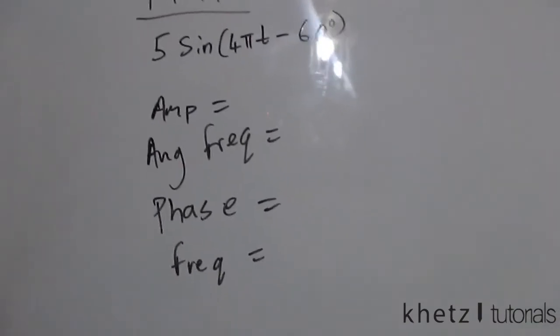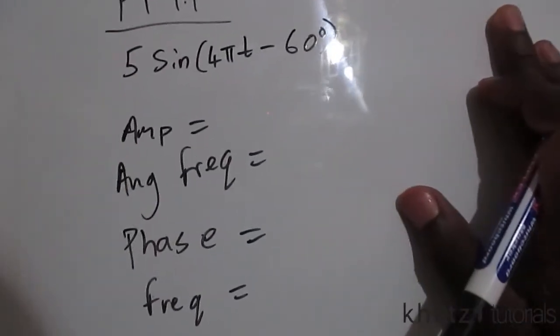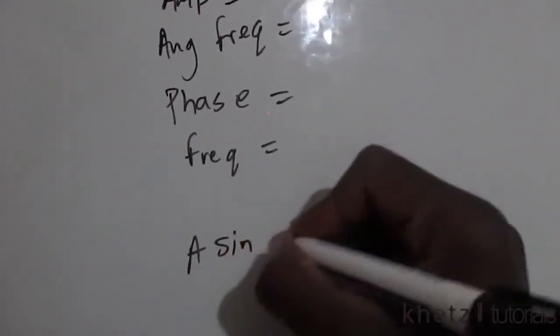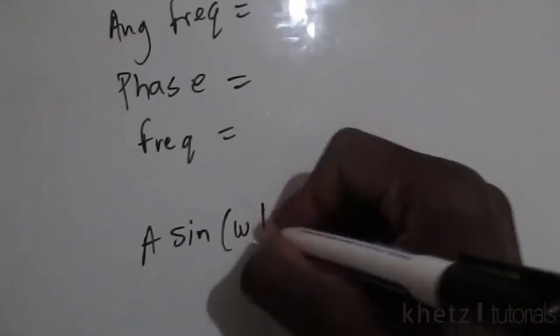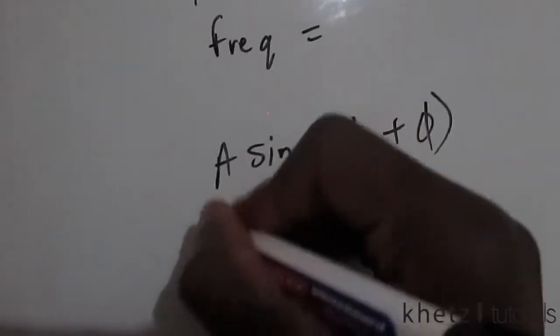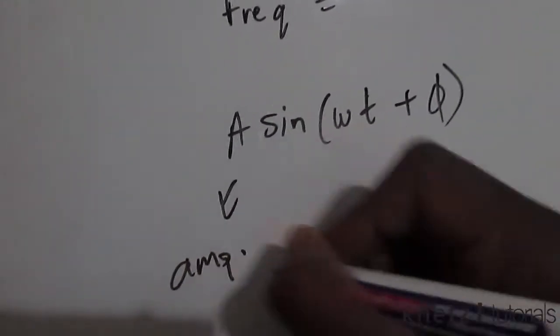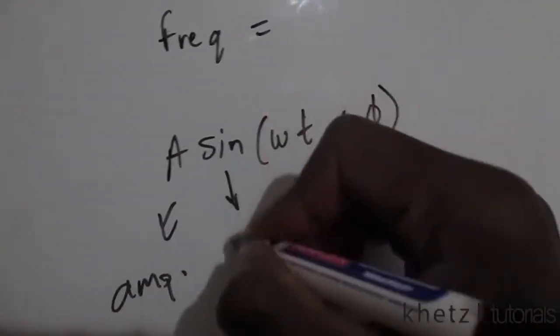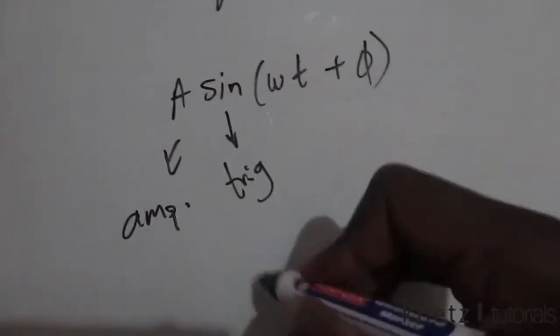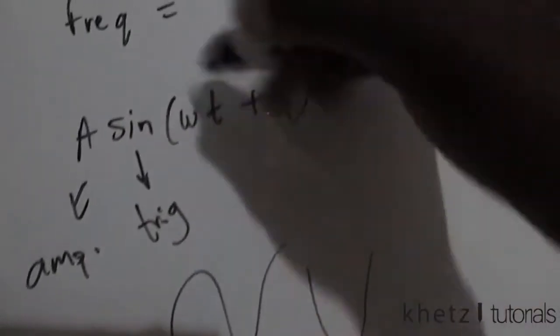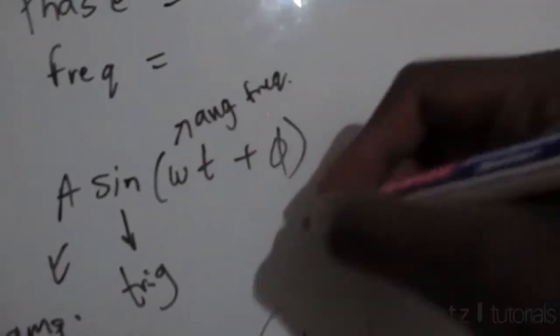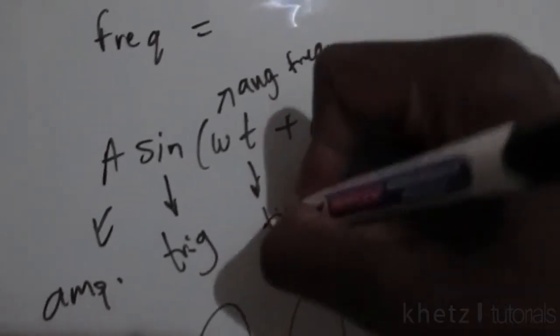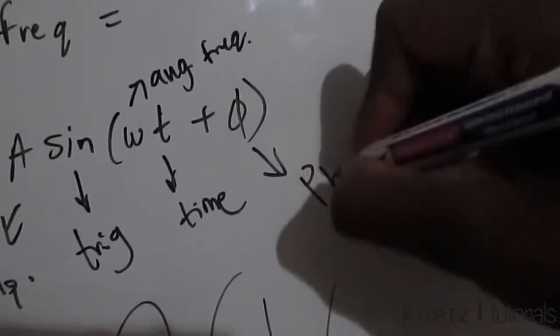All right, so let's go back to the general form of a sinusoid that is of this form: A sin(ωt + φ), where A is our amplitude and this is a trig function which represents the sinusoid as a time variant function. This is our angular frequency ω, this is time t, and this here is our phase φ.